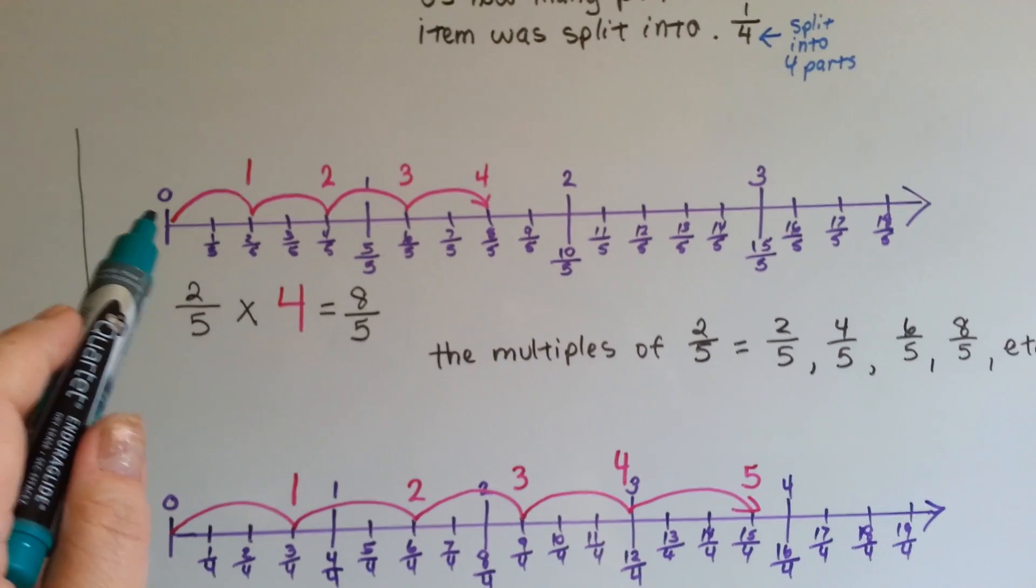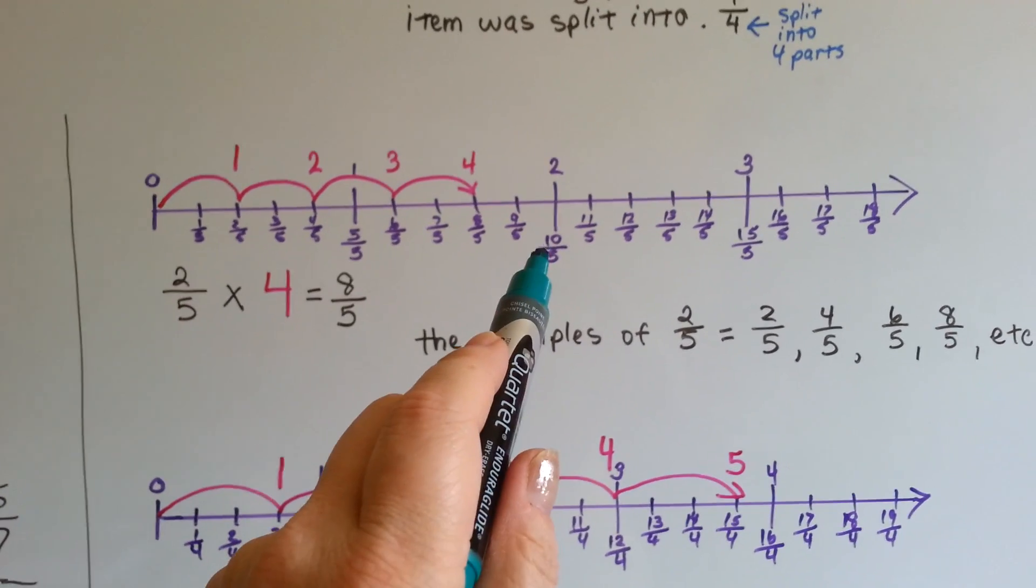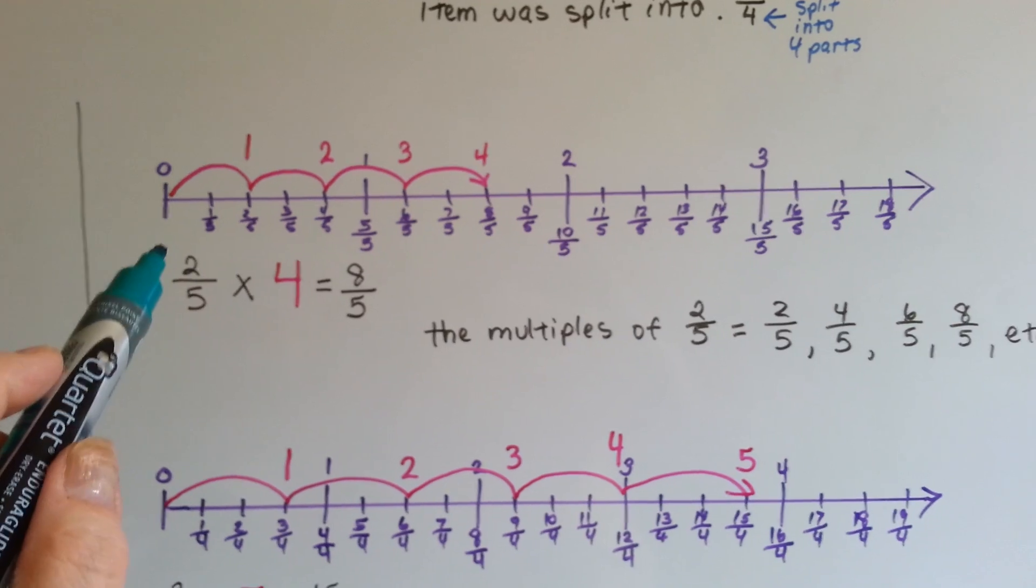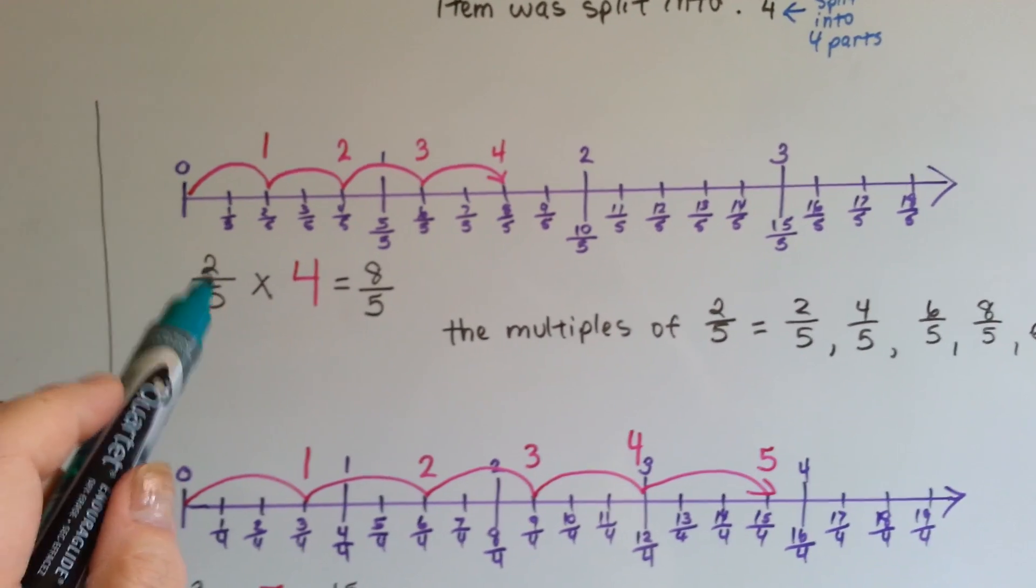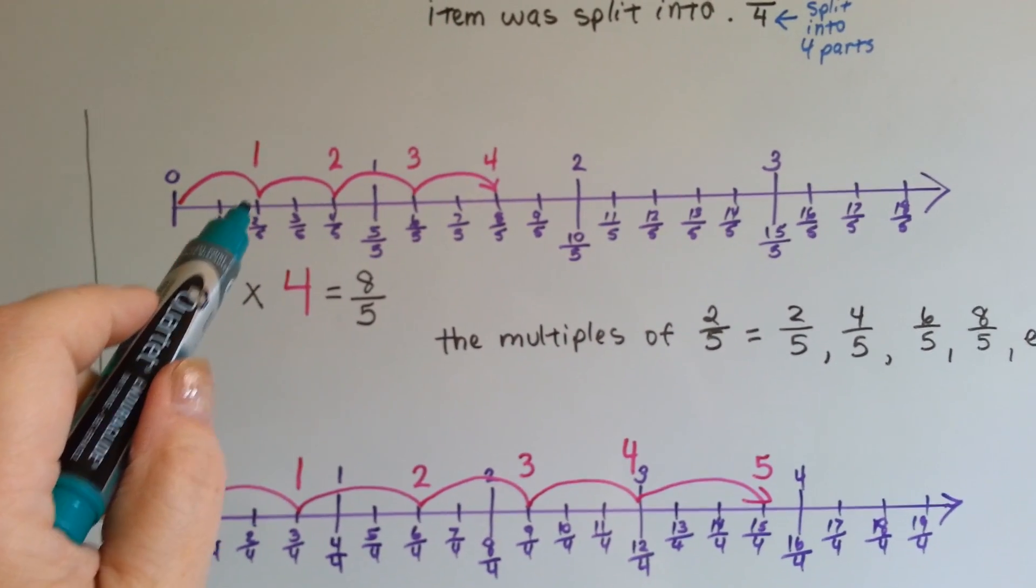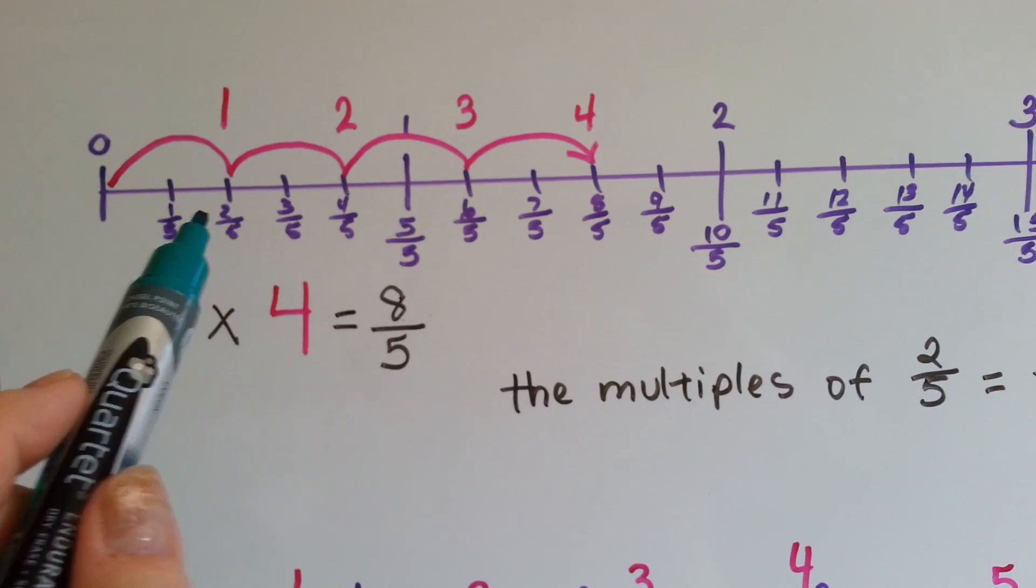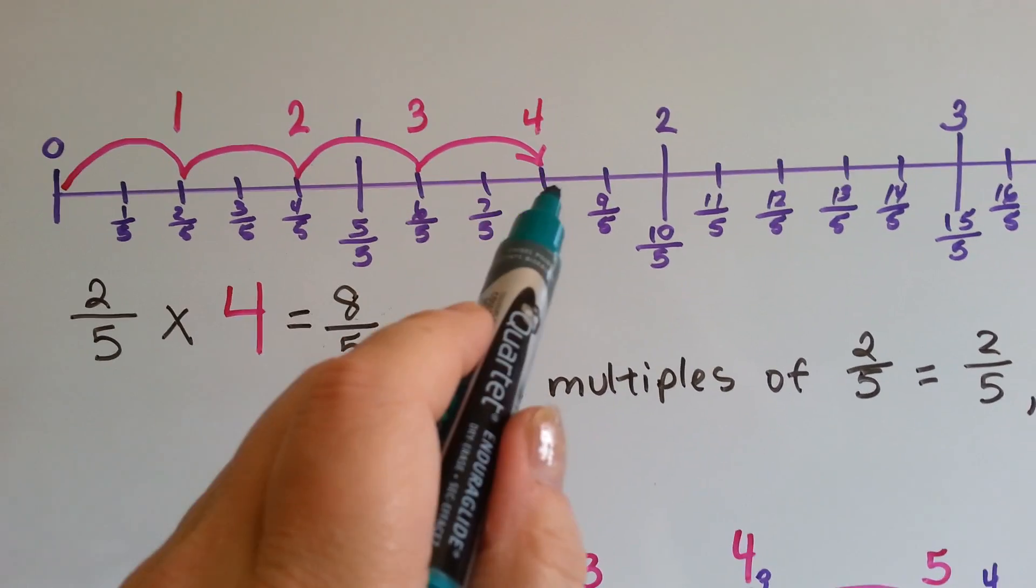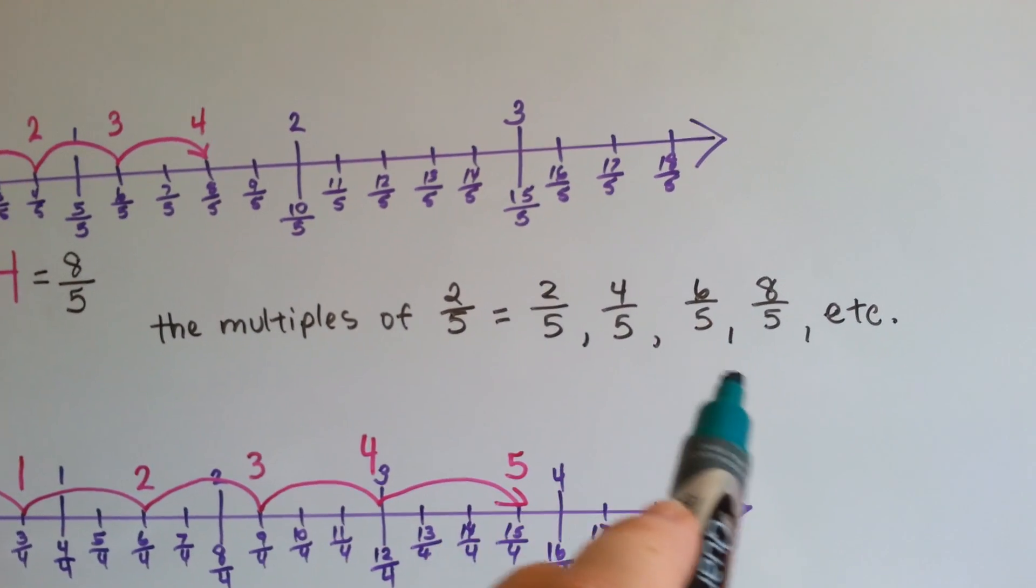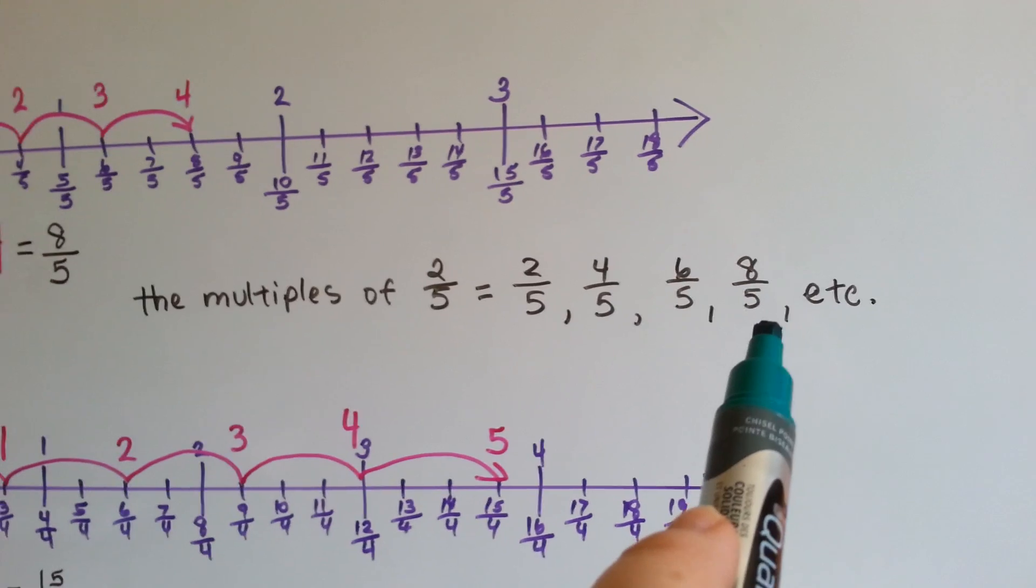If we look at a number line, here's 0. Here's 1, because 5 fifths is 1. Here's 2, because 10 fifths is 2. Here's 3, because 15 fifths is 3. If we needed to multiply 2 fifths times 4, that means we would need 4 of these. We would jump 4 times 2 fifths. Here's the first jump, here's the second jump, here's the third jump, and here's the fourth jump, and that brings us to 8 fifths. It went from 0 to 2, 4, 6, 8 fifths. The multiples of 2 fifths are 2 fifths, 4 fifths, 6 fifths, 8 fifths. The numerator is jumping by 2 each time, but the denominator is staying the same.